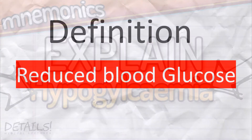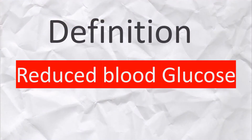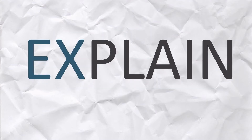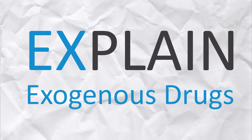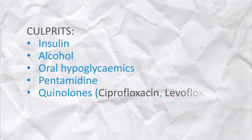Hypoglycemia, simply put, is reduced blood sugar, and the mnemonic we are using to remember its causes is EXPLAIN. EX in EXPLAIN stands for exogenous drugs, most commonly due to insulin, alcohol, and oral hypoglycemics.